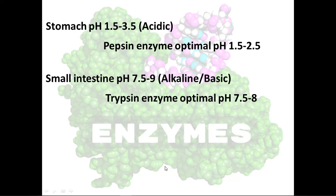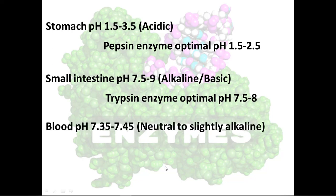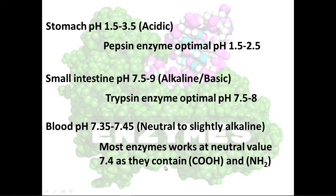In our small intestine, we have another enzyme that helps in digestion called trypsin, and its optimal pH is 7.5 to 8. All other enzymes that work in our body have an optimal pH around 7.4, because this neutral value maintains the carboxylic group and the amino group at a neutral state. The pH in our blood ranges from 7.35 to 7.45 to keep it neutral or slightly alkaline — optimal for all other enzymes in our body except those in the stomach and small intestine.